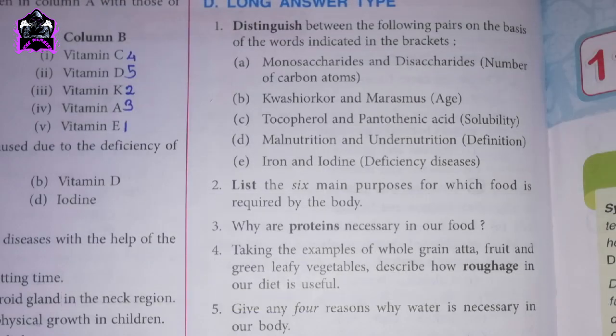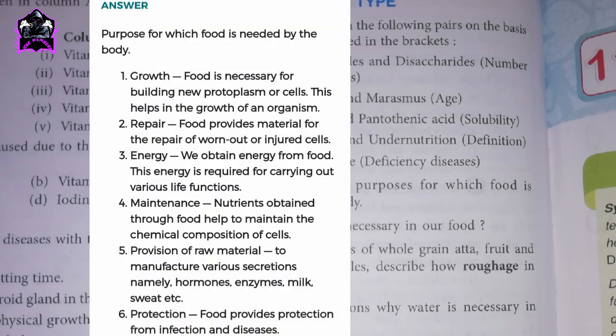Question 2: list the six main purposes for which food is required by the body. 1. Growth: food is necessary for building new protoplasm or cells, which helps in the growth of an organism. 2. Repair: food provides material for the repair of worn-out or injured cells. 3. Energy: we obtain energy from food, required for carrying out various life functions. 4. Maintenance: nutrients obtained through food help to maintain the chemical composition of cells. 5. Provision of raw material: to manufacture various secretions namely hormones, enzymes, milk, sweat, etc. 6. Protection: food provides protection from infection and diseases.